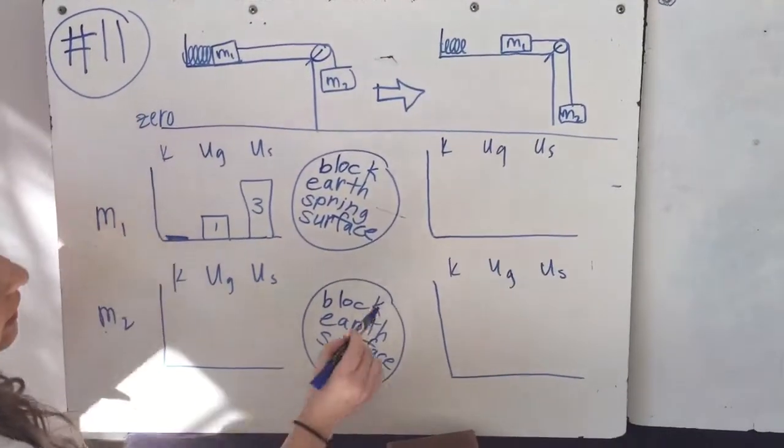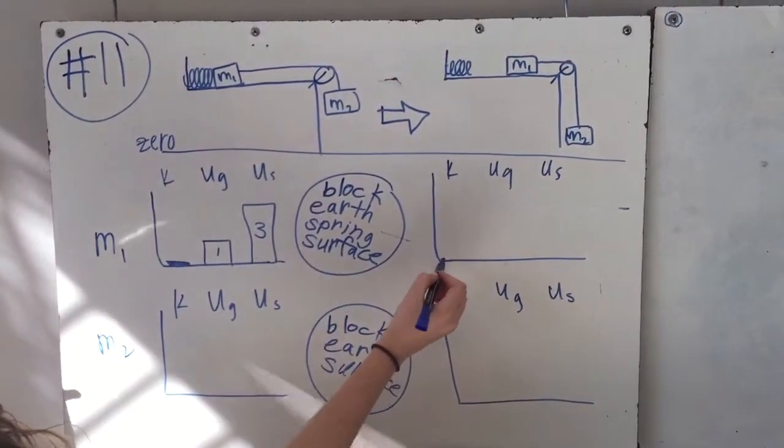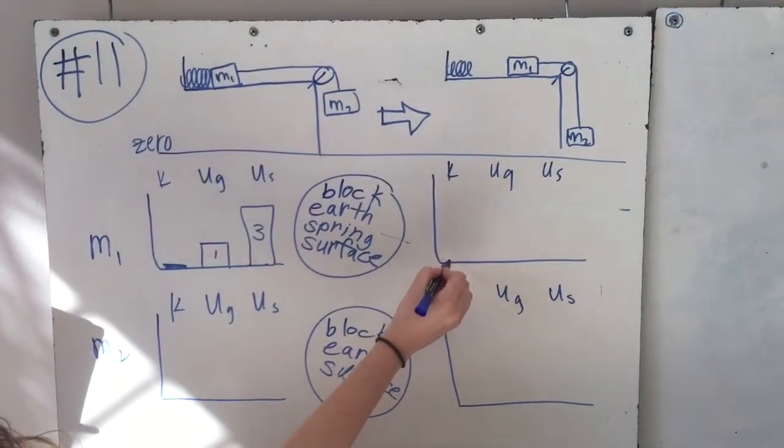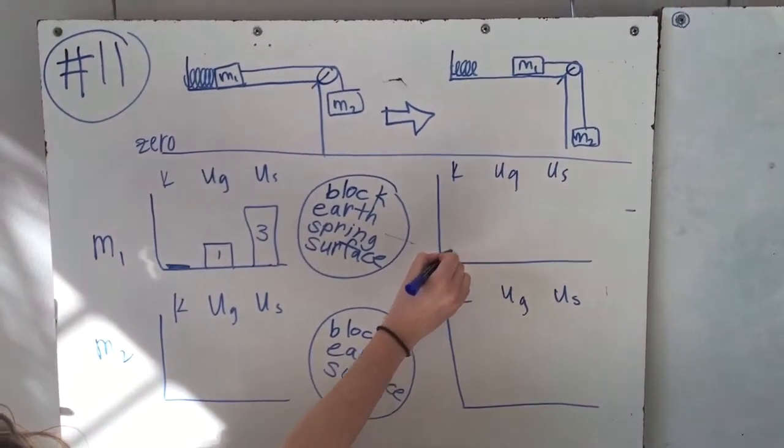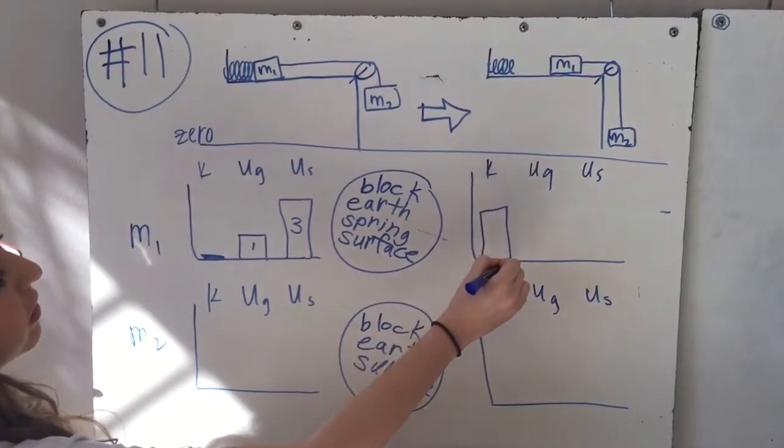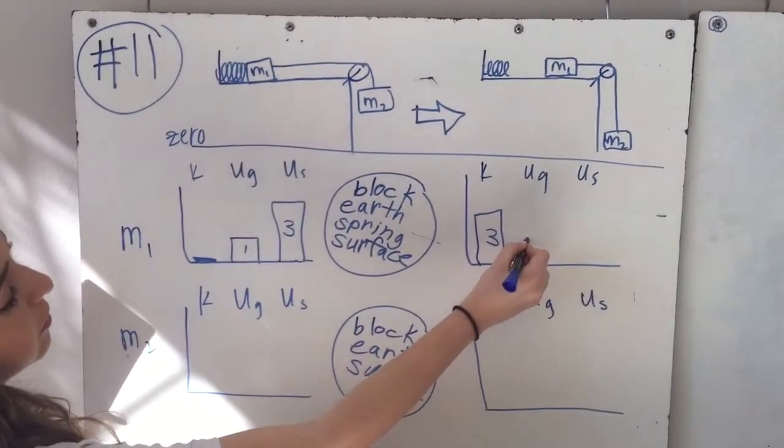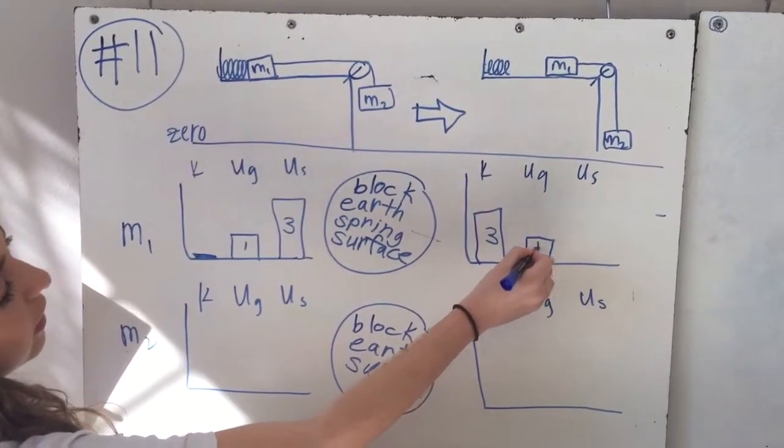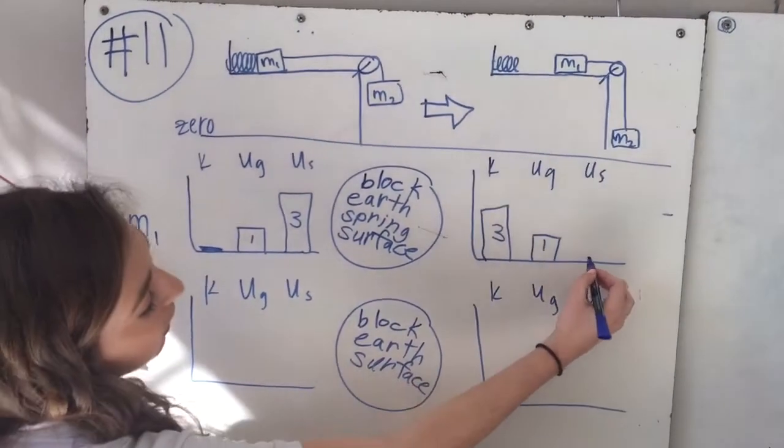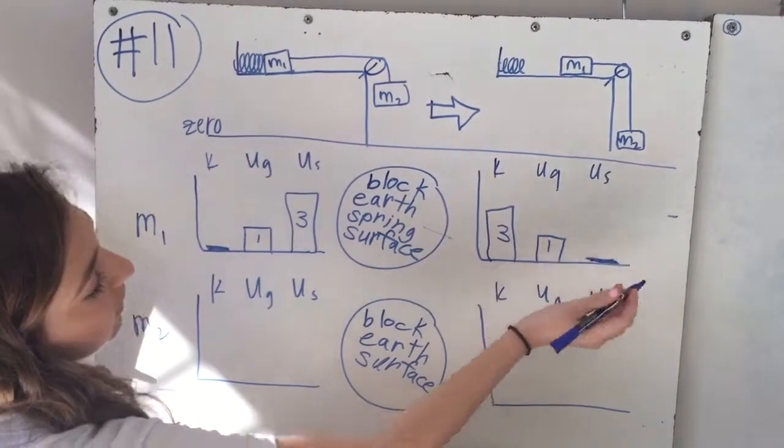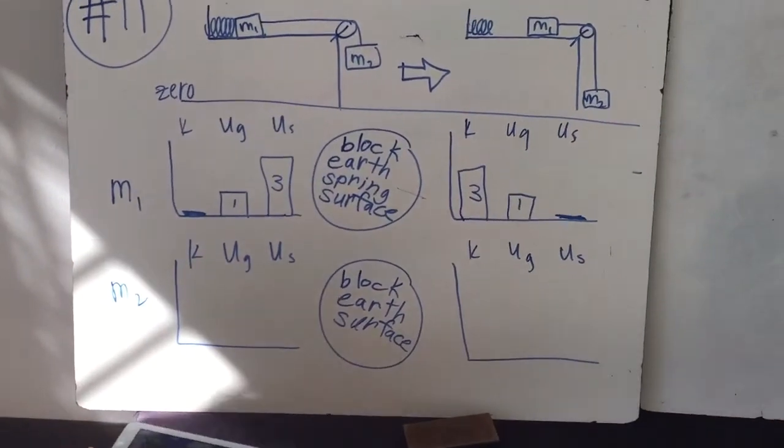And then over here, for mass 1 still, now it has kinetic energy because it's in motion of 3, and potential energy still because it still has a height. And there's no spring potential energy because it's separating the string at that point.